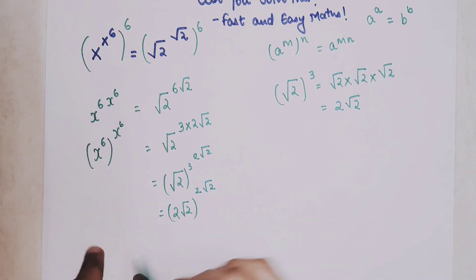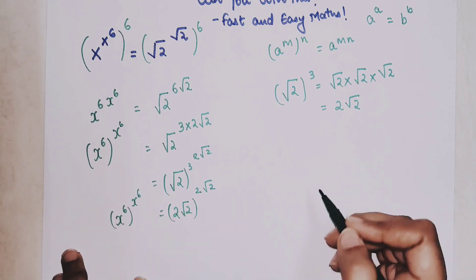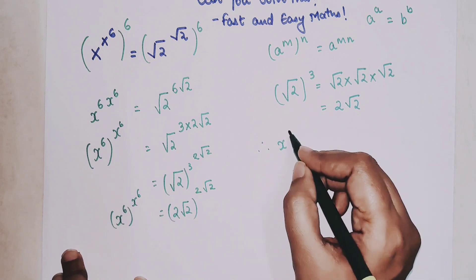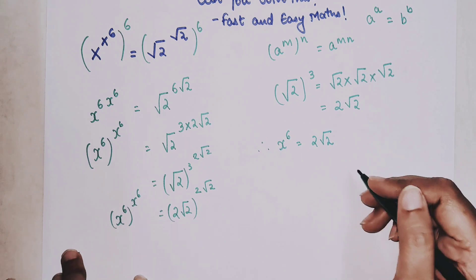Now please understand this is not your final answer. Why? Because this is still equal to x raised to 6 the whole x raised to 6. So I can say therefore x raised to 6 is equal to 2 root 2.